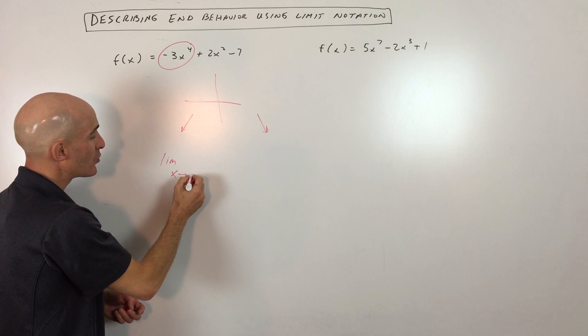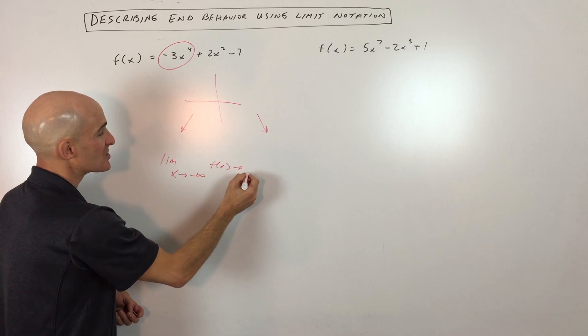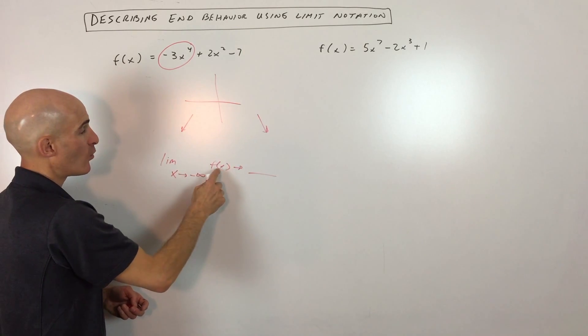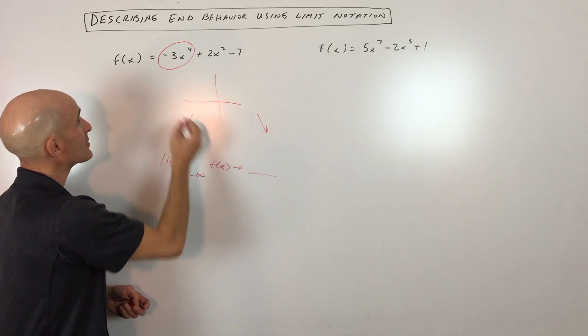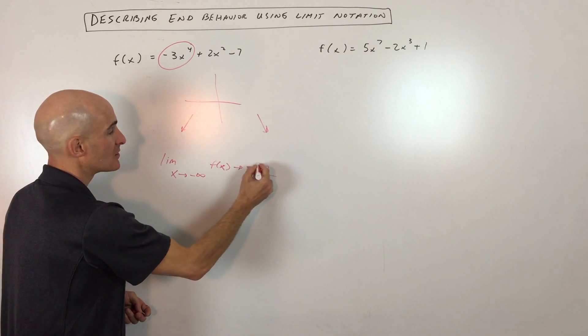So the limit as x approaches negative infinity, f of x approaches blank. Now, what this means is as x is going to negative infinity, as I'm going to the left, what happens to f of x? f of x are the y values. And you can see the y values are going down to negative infinity.